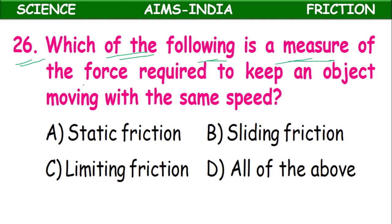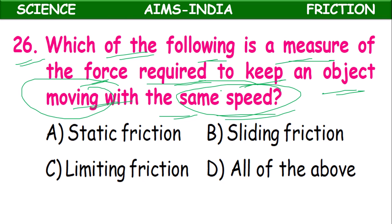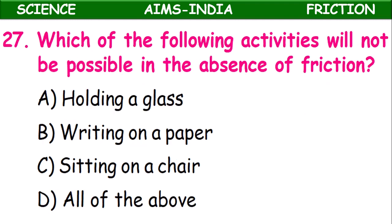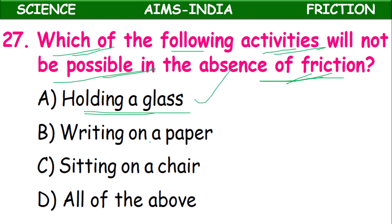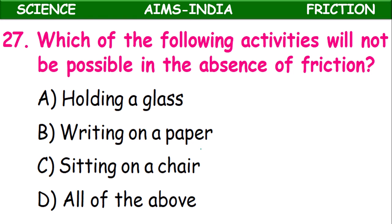Twenty-sixth question: Which of the following is a measure of the force required to keep an object moving with the same speed? Since the object is already moving, we need sliding friction to keep it moving at the same speed. If it were starting from rest, that would be static friction. Answer: option B, sliding friction. Twenty-seventh question: Which activities will not be possible in the absence of friction? Holding a glass — not possible. Writing on paper — not possible. Sitting on a chair — not possible. All of the above are not possible, so answer: option D.